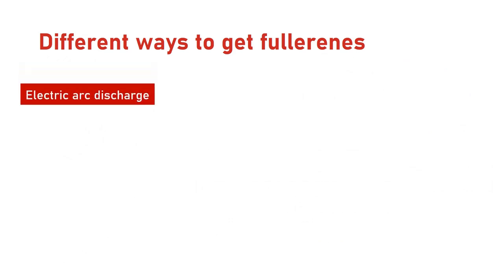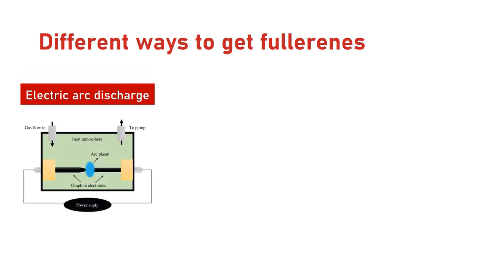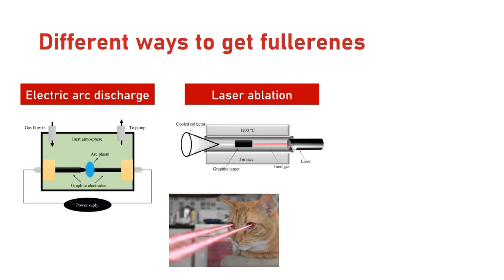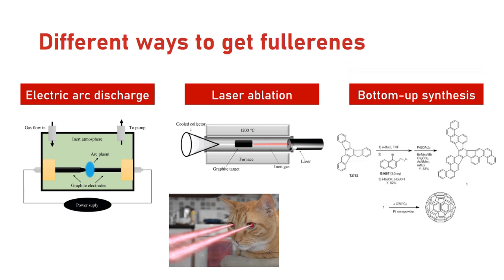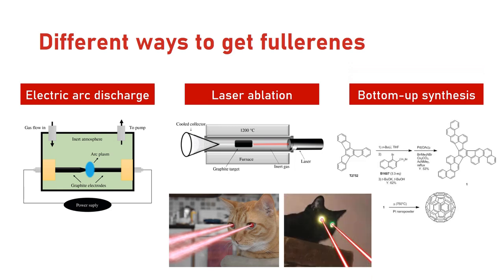There are different ways to get fullerenes and as you can imagine they are very elusive and exotic. The most widespread is electric arc discharge, which is based on some ionization wizardry between graphite electrodes. The second one is laser ablation, where graphite is being successively fired at with lasers, leading to vaporization of carbon and formation of fullerenes after deposition of these carbons at a downstream collector. The third one is painful bottom-up organic synthesis, where polycyclic aromatic compounds are built up and then either pyrolyzed at blistering hot temperatures or also shot at with lasers.